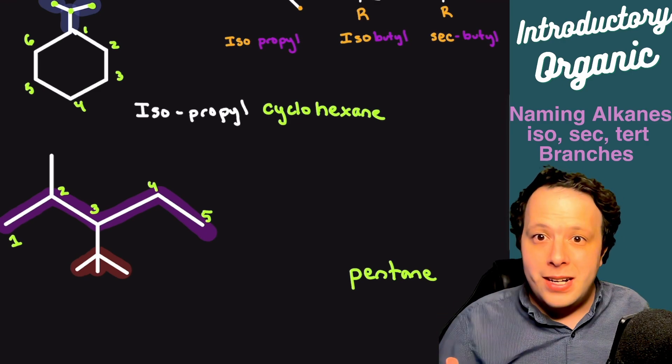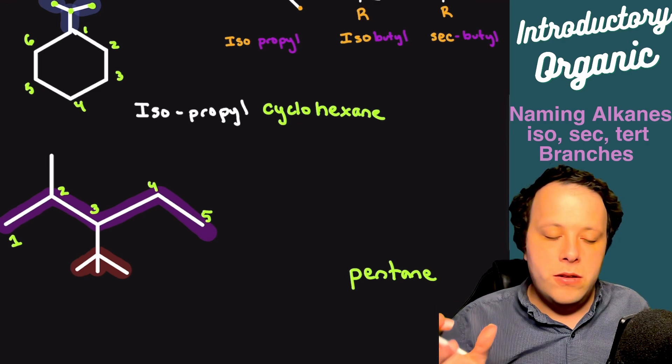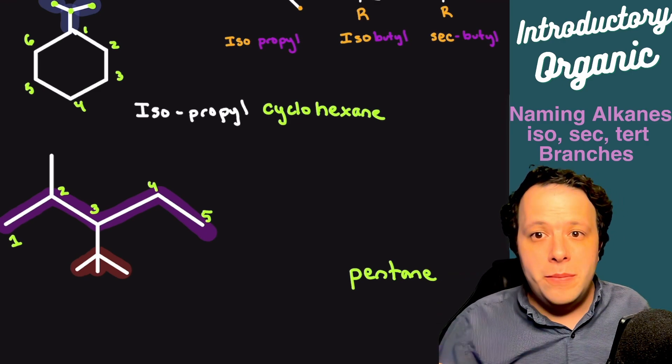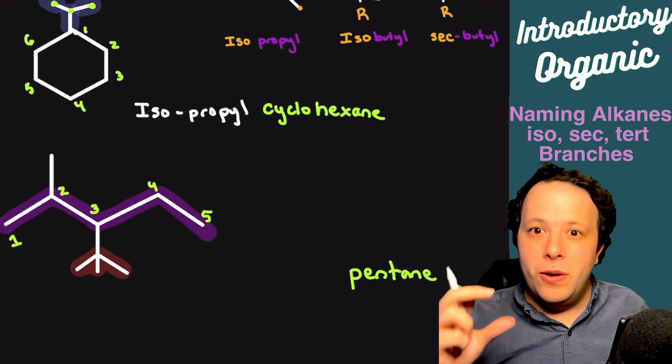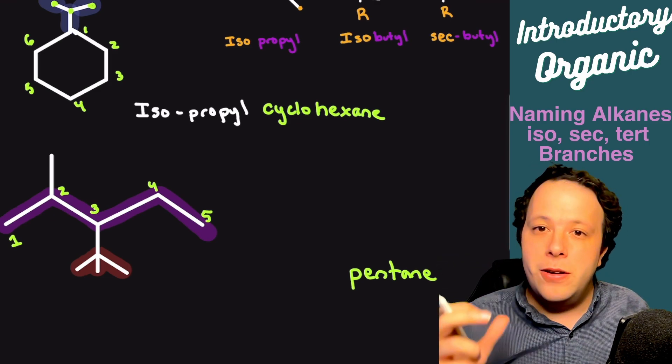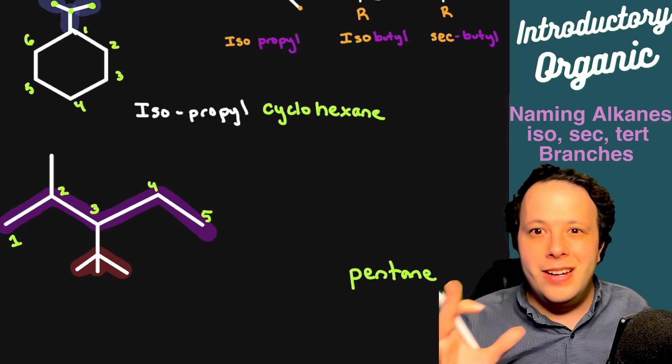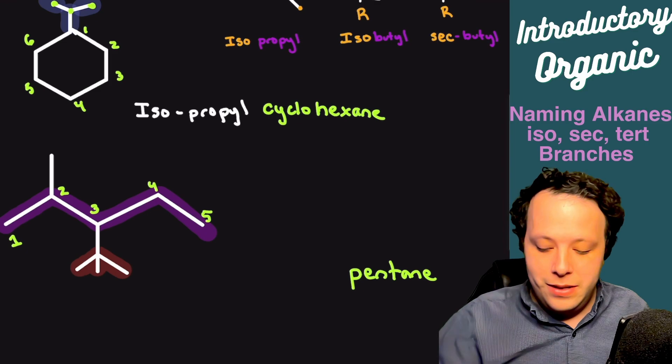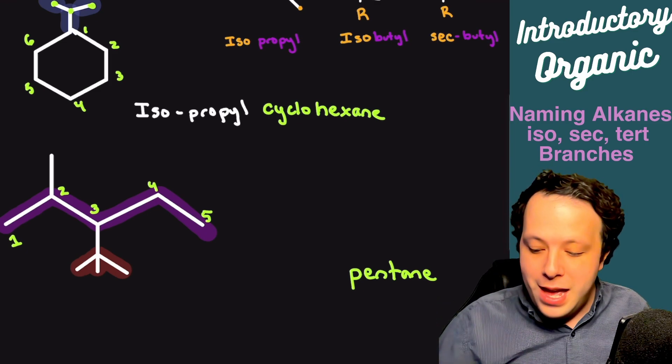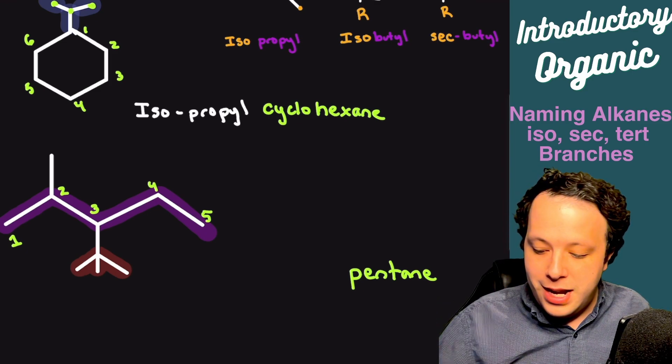Now we want to alphabetize our different groups. Would I go by the 'T' for tert-butyl? Being that you want to go by what the actual branch is, butyl, you go by 'B', not by the 'T' part of it. You always go off of what the actual branch is. So 'B' comes before 'M', which is the methyl that is attached here as well.